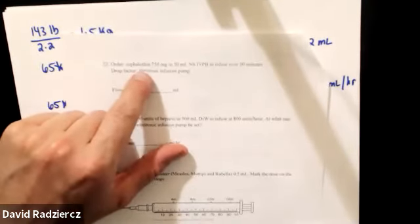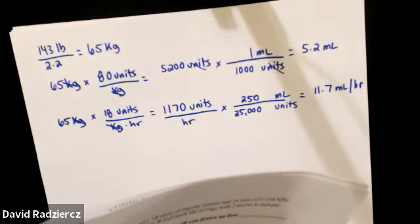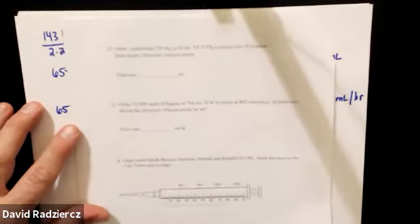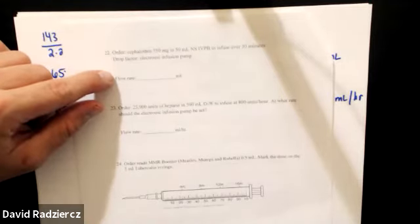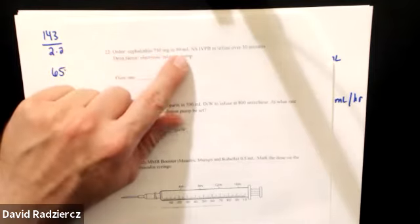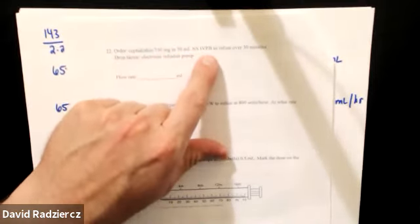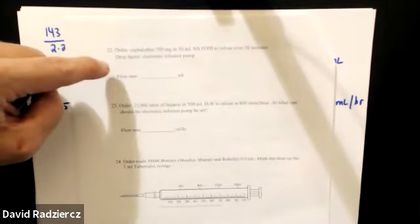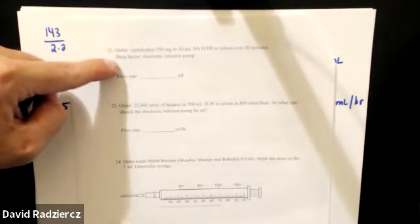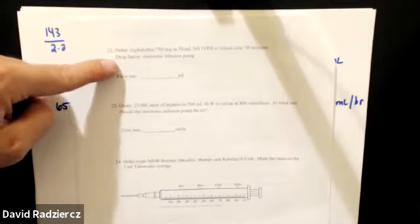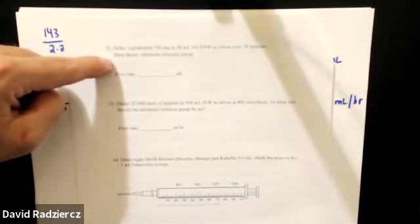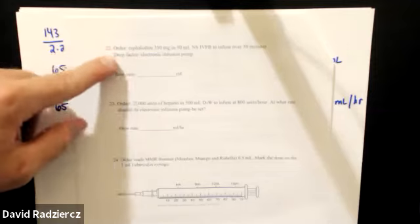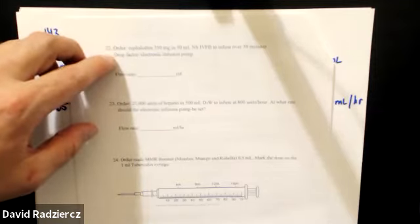There are two more flow rate questions. First: cephalothin 750 milligrams in 50 milliliters normal saline by IV piggyback to infuse over 30 minutes. It mentions an electronic infusion pump with a drop factor, then says flow rate in milliliters. Do you know what the drop factor is for an electronic infusion pump?